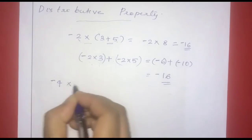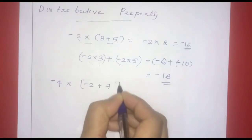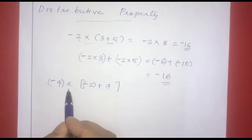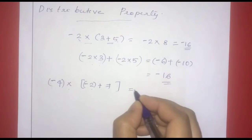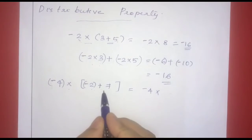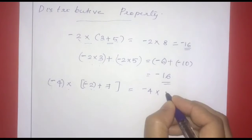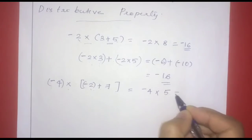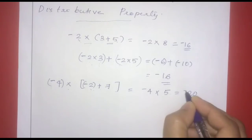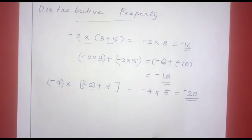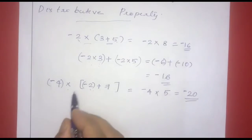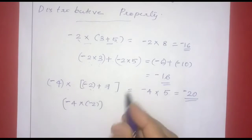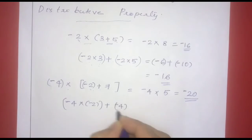Another example: negative 4 into (negative 2 plus 7). We compute negative 2 plus 7 to get 5, so negative 4 into 5 gives negative 20. Since there is one negative sign, the answer is negative.